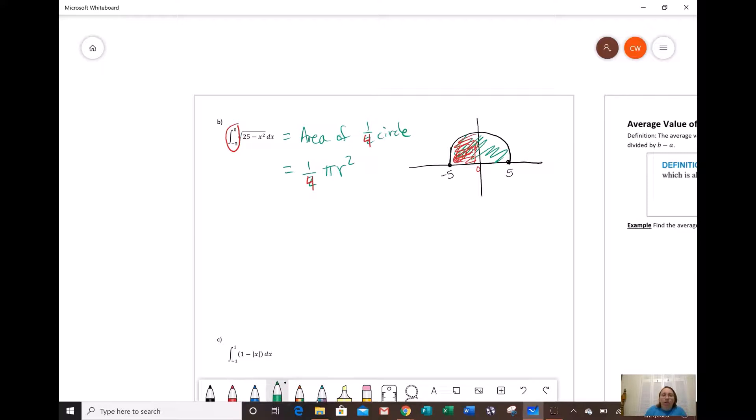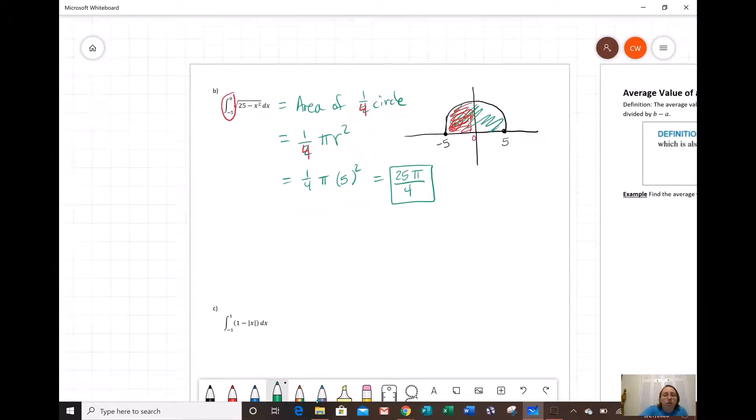So all we've got to plug in is r. r is the square root of the 25, so it's the 5. So 1 over 4 pi times 5 squared, so that's 25, 25 times pi over 4. And that would be the area of a quarter of the circle defined by this curve. So that's kind of cool.